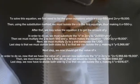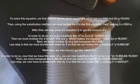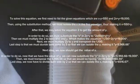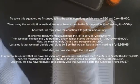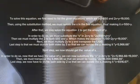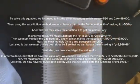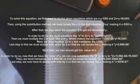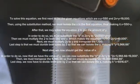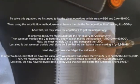Then, using the substitution method, we must isolate x in the first equation, making it x equals 550 plus y. After that, we may solve equation 2 to get the value of y. In order to do so, we substitute x in 2x plus y with (550 plus y), giving us 2(550 plus y) plus y equals 19,000.